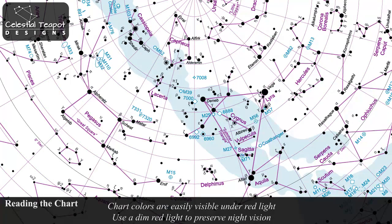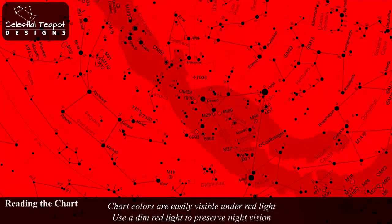The star chart was designed to be used under red light. Stars and deep space objects will be shown in a dark black. Constellation lines, coordinate grids, and other symbols will be shown in shades of grey.